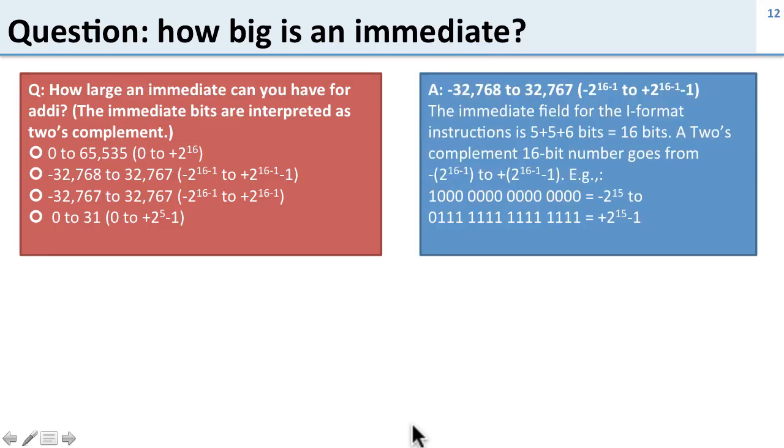Well, the answer here is -32,768 to 32,767, and the reason for this is we have 16 bits for our immediate field and a two's complement 16-bit number goes from -2^15 to +2^15-1. So this is the most negative number and this is the most positive number, and that works out to a range from -32,768 to +32,767.